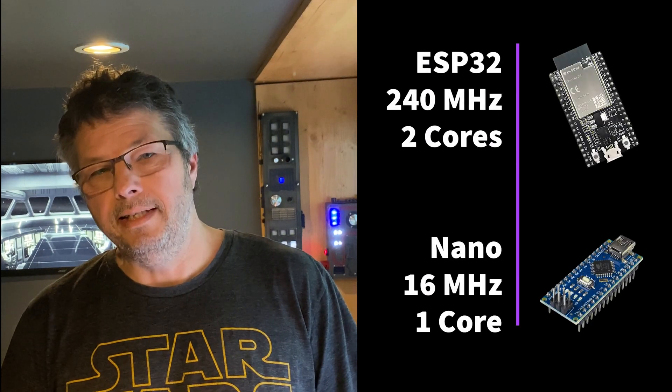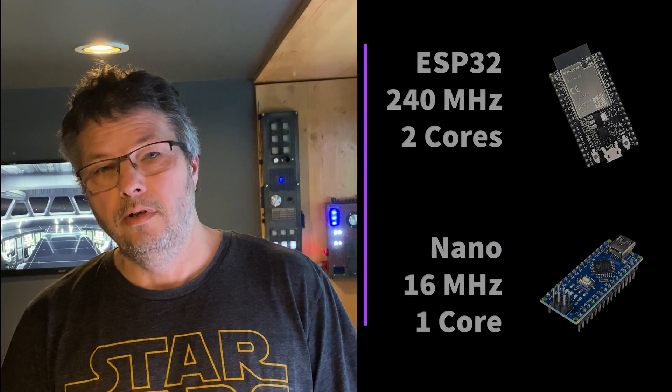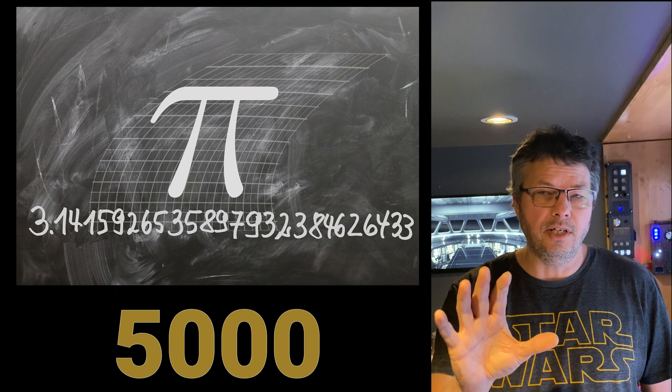You probably already know that ESP32 is faster than an Arduino. But how much faster is it really? We're not going to look at some benchmark with a score at the end — that's boring. We're going to see how fast it is to calculate 5,000 digits of the PI constant, and how fast it is to animate objects on a small OLED display like this one.